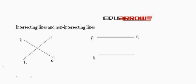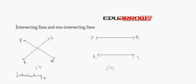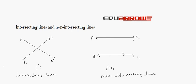Intersecting lines and non-intersecting lines: Let's draw two lines PQ and RS in two different ways. In figure one, PQ and RS are intersecting lines. In figure two, PQ and RS are non-intersecting lines, as they are parallel to each other and will never intersect. The perpendicular distance between them at any point is always equal.